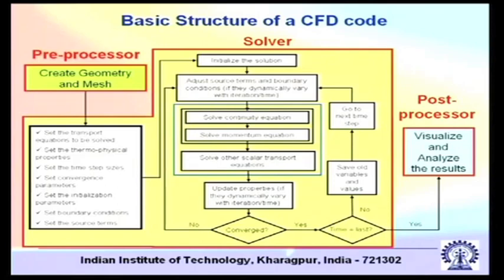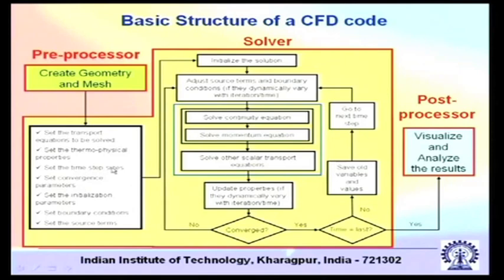Many times we are abstracted from this basic structure when using a code because we are only using the user interface. If you consider the preprocessor, it has different functionalities. One of the important functionalities is to create a geometry and a mesh for solving a problem. You need to set the transport equations that need to be solved, because the code does not know which equations you need to solve. Set the thermophysical properties. If it is an unsteady problem, set the time step sizes. You can use a large single time step to convert an unsteady mode into an equivalent steady state implementation. Set the convergence criteria, initialization parameters, boundary conditions, and source terms.